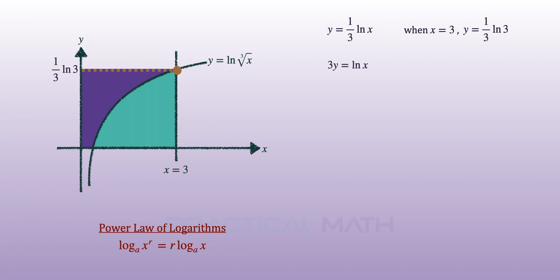To find the purple area, we will need to make x the subject of the equation. So multiplying by 3 throughout, we will get 3y equals to ln x, which is the same as log x to the base of e, as ln is a natural log to the base of e.